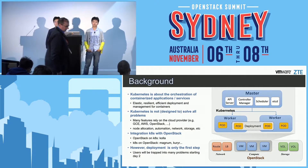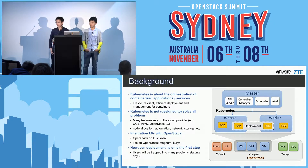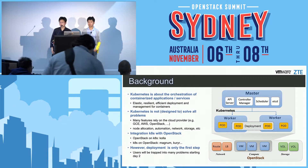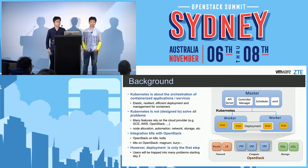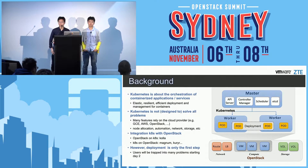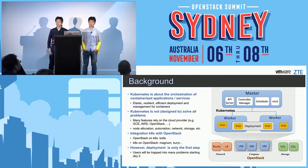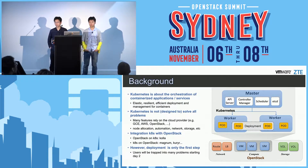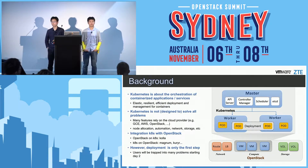As we know, Kubernetes is good at packing and deploying containers, but Kubernetes is not designed to solve all the problems. Many features rely on cloud providers, such as node automation, network, and storage. Many projects in OpenStack want to integrate with Kubernetes, but many of them only do the deployment, and for day-two operations there is still ongoing work.